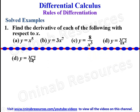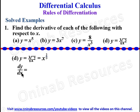Again we are going to write this in index form. We maintain x raised to power 2, and the cube root becomes a fraction, so 1 over 3 times 2 gives us x raised to power 2 over 3. This way we can easily differentiate.